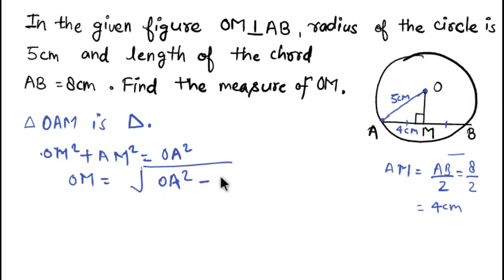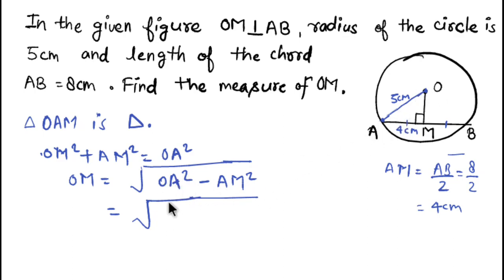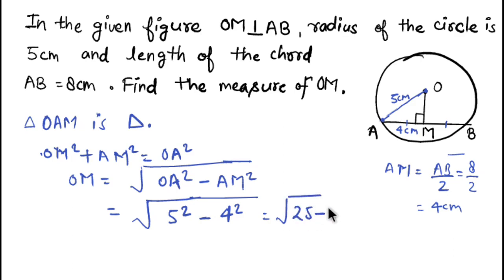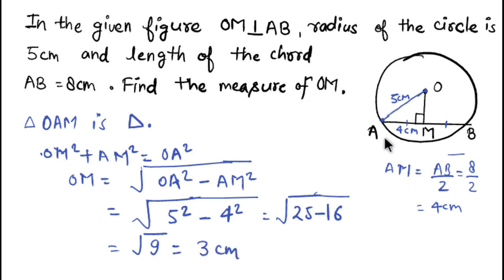Now substituting the values: OA is the radius of the circle, which is 5 centimeters, and AM is 4 centimeters. So OM equals the square root of 5 squared minus 4 squared, which is the square root of 25 minus 16, giving us the square root of 9, which equals 3 centimeters.